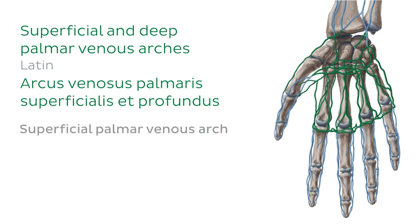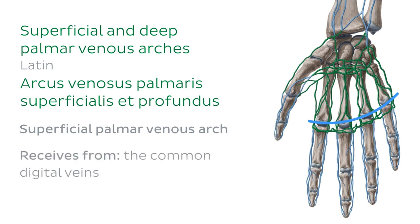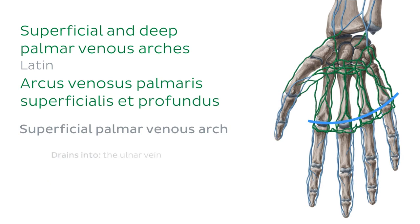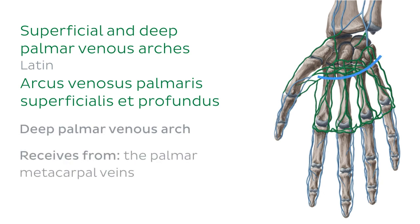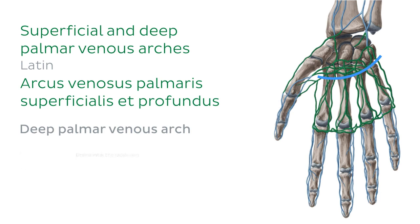The superficial palmar venous arch receives venous blood flow via tributaries from the common digital veins — the term digital referring to the fingers. This then drains into the ulnar vein, which I'll cover in more detail later. The deep palmar venous arch receives blood flow from tributaries of the palmar metacarpal veins and drains into the radial vein, which we'll also come to later on.